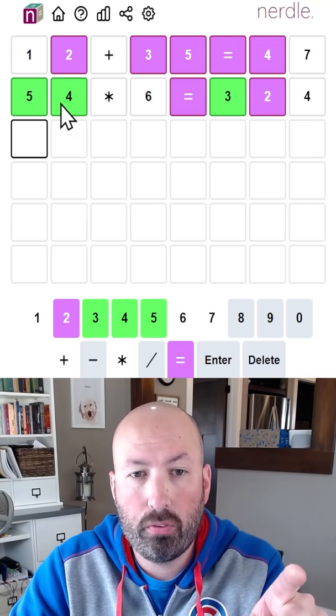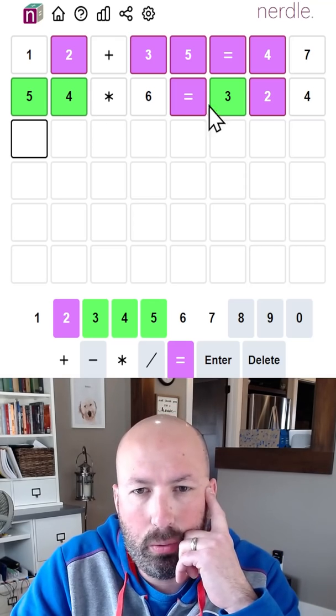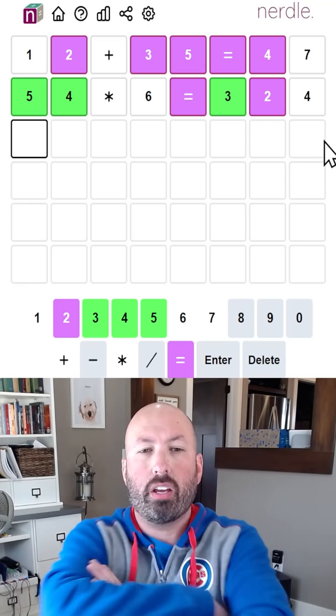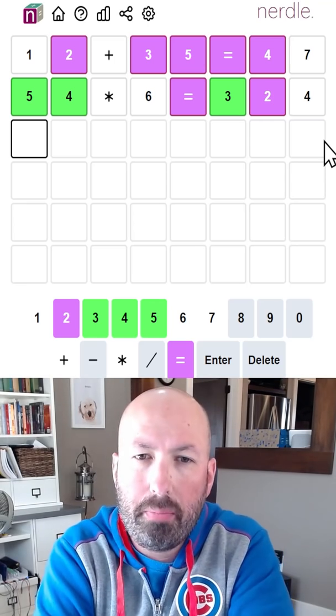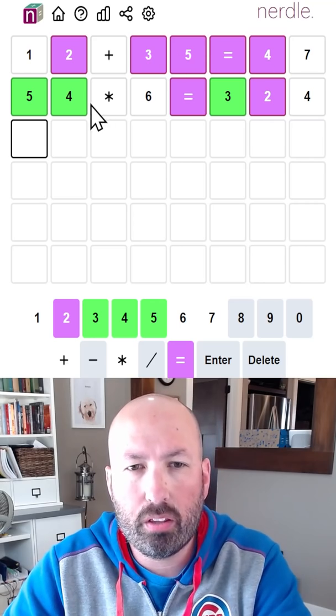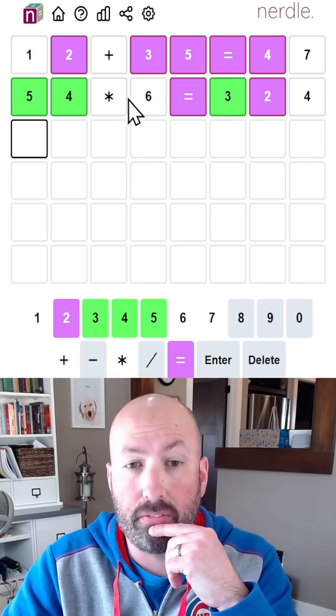Okay, so it is 54. Oh, it's not times. Oh, and it's not equals. So it has to be equals a single digit. Okay, so we're doing subtraction maybe? No, because it would be a three-digit minus a two-digit if we were doing subtraction. So it's got to be division.